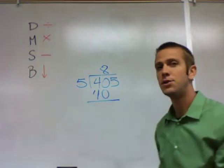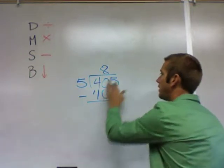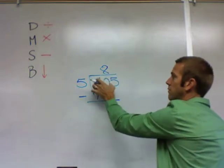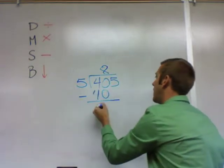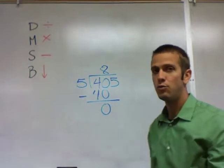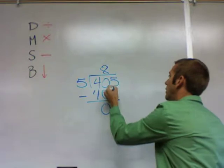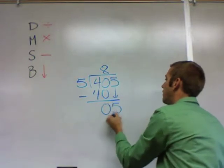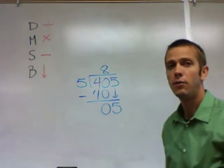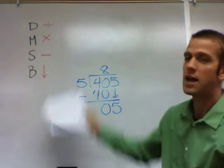Then we do sister subtract. You subtract, you're ignoring the 5 now, but you're subtracting 40 minus 40, and that is 0. And then you do brother bring down. You always bring down the next number in the column, and that number is 5. We've done divide, multiply, subtract, and bring down now.